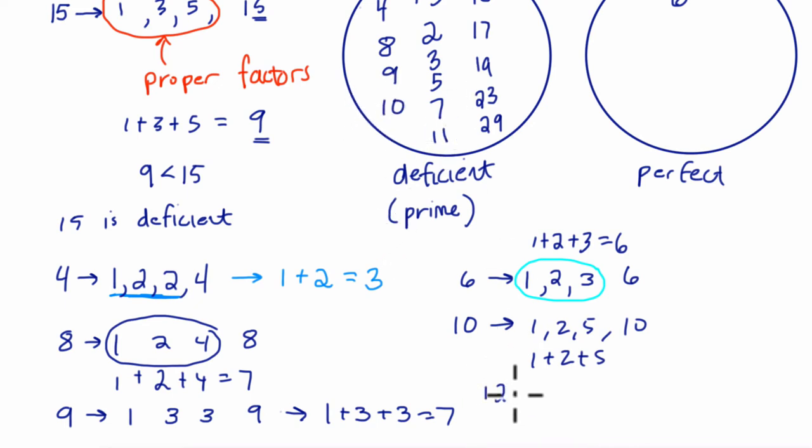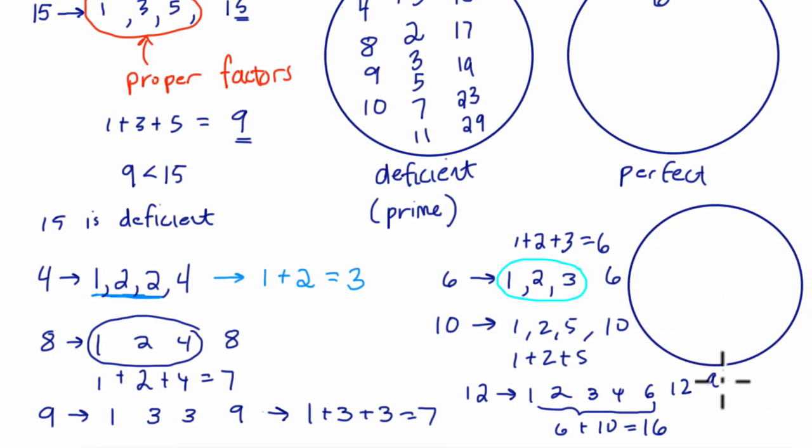11, we have 12. What about 12? Let's see what happens here. 1 times 12, 2 times 6, and 3 times 4. So if we add up the proper factors here, we get 1 plus 2 is 3, plus 3 is 6, plus 4 plus 10. So 4 plus 6 is 10, and then 16. And there it is, folks, our first abundant number. So I'm going to just draw a little circle over here, and write the word abundant, and put the number 12 in there. So these are the abundant numbers, and we have a 12 in there.